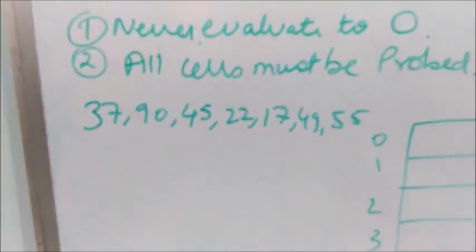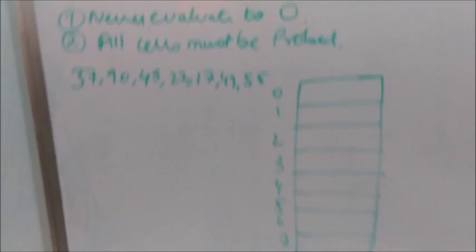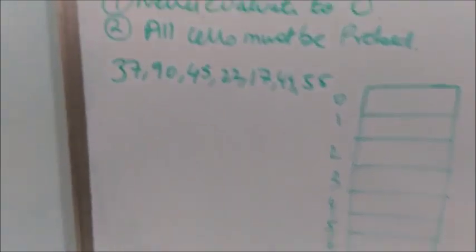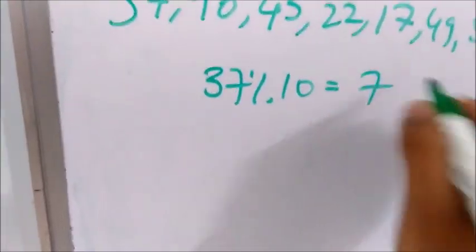We have these elements to be inserted into the table and table size is 10. Let us insert 37. We have 37 mod 10, it will be at 7th location.